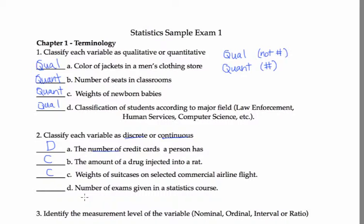Number of exams given in a stats course. Number of. One, two, three, four. That's discrete.